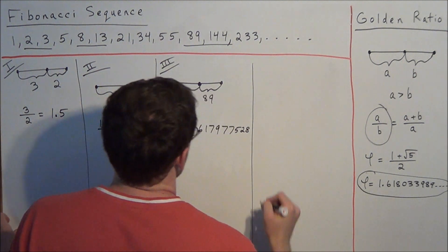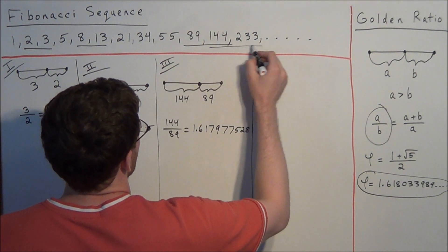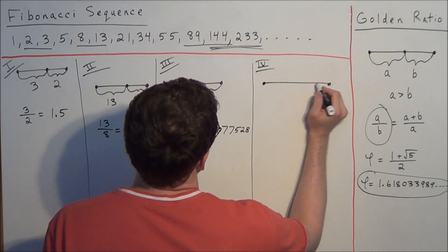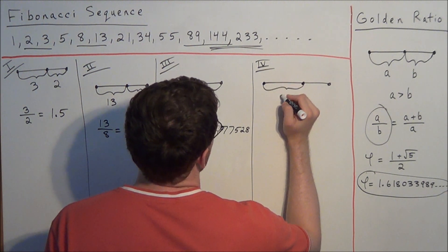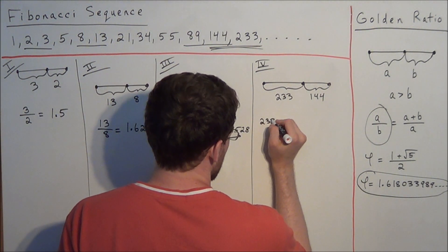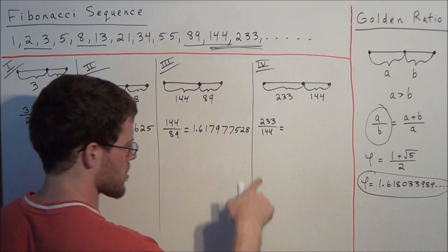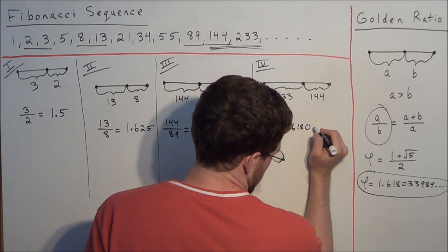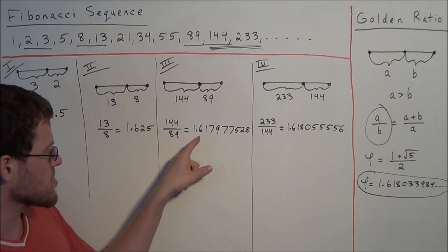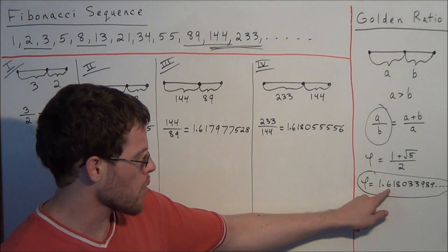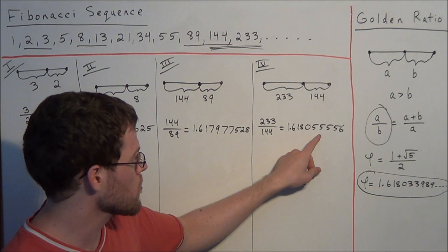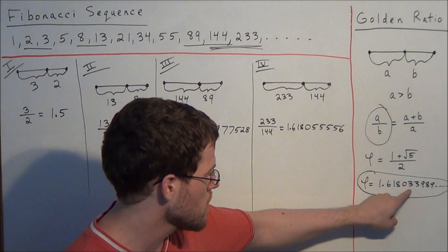For the last pair of numbers, we'll look at 233 and 144. We set the lengths of our line segments equal to 233 and 144. When we look at the ratio 233 over 144 on our calculator, we get 1.618055556. Notice how we went from 1.6179 to 1.6180 — we're now accurate up to the ten-thousandths place. If we picked another pair of Fibonacci numbers further down the list, we would move from 555556 even closer to 33989.